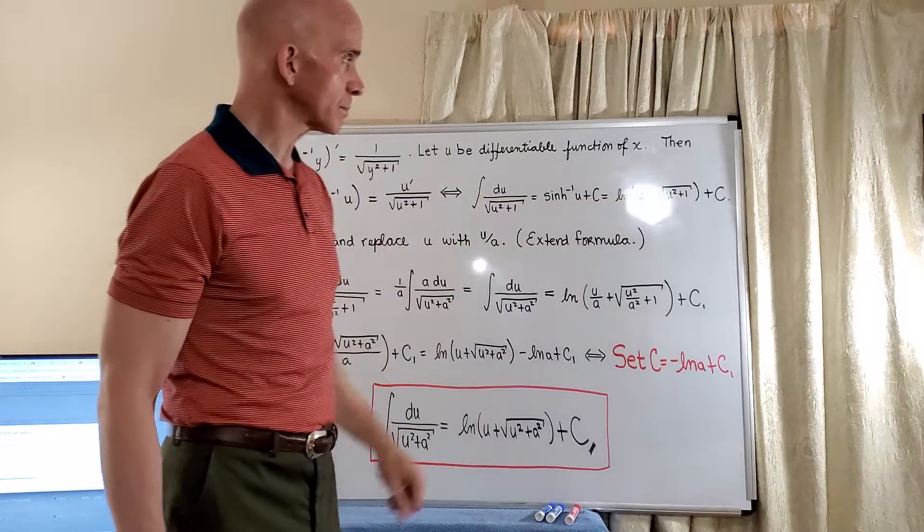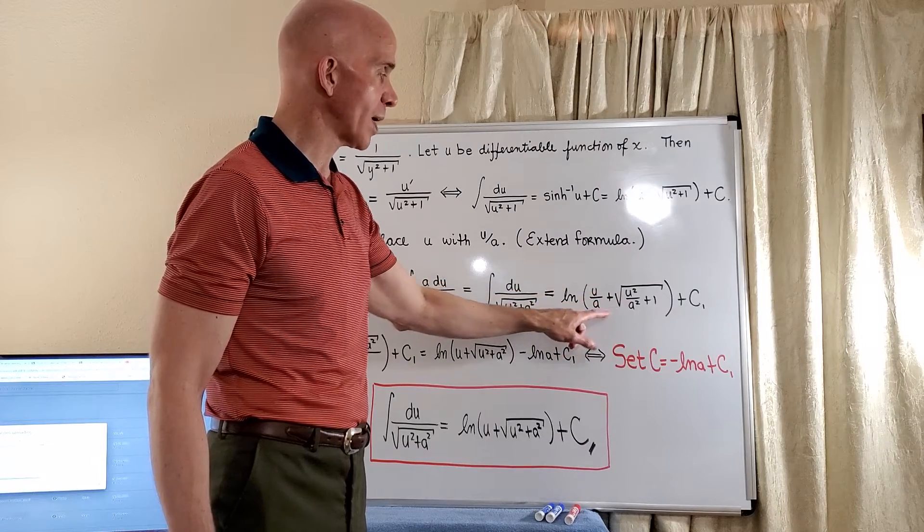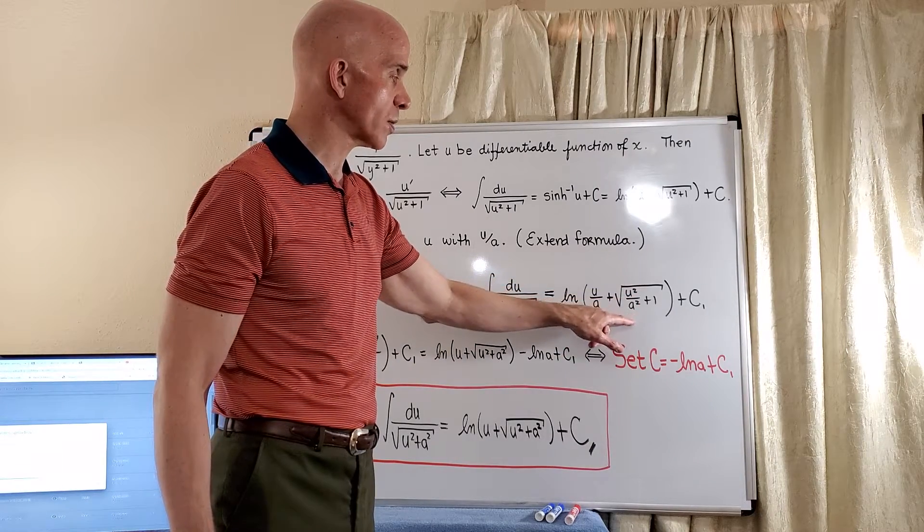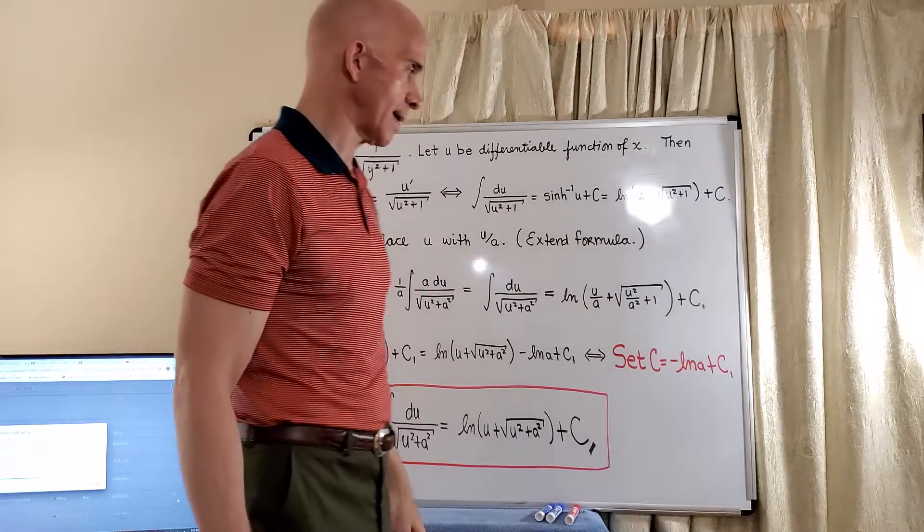And we'll do likewise here. We'll go ahead and replace u with u over a. So we have u over a plus the square root of u squared over a squared plus 1. And I'm going to write my constant as c1 this time.